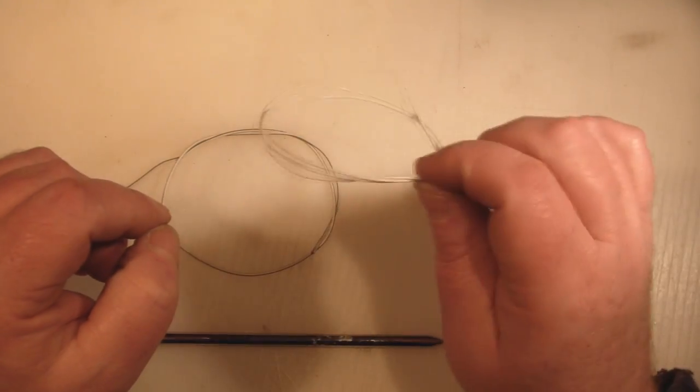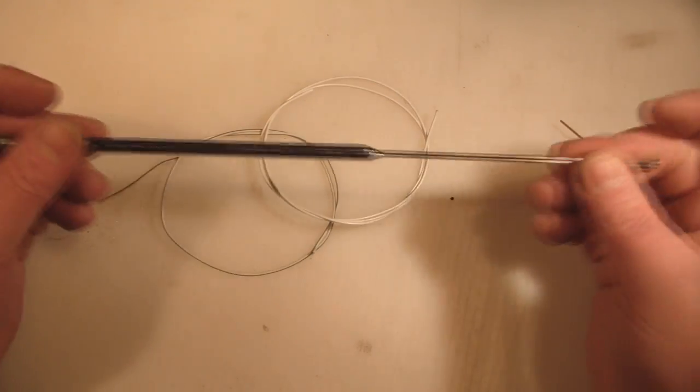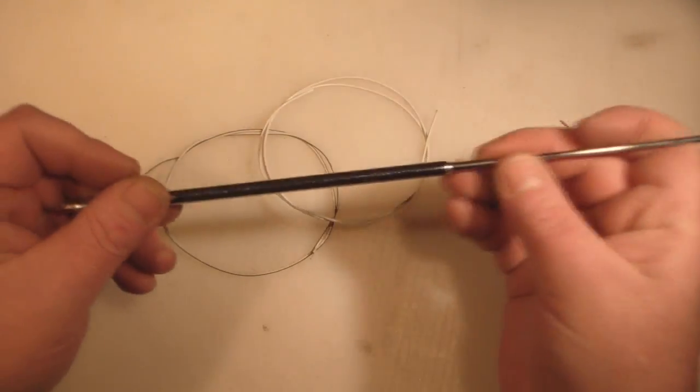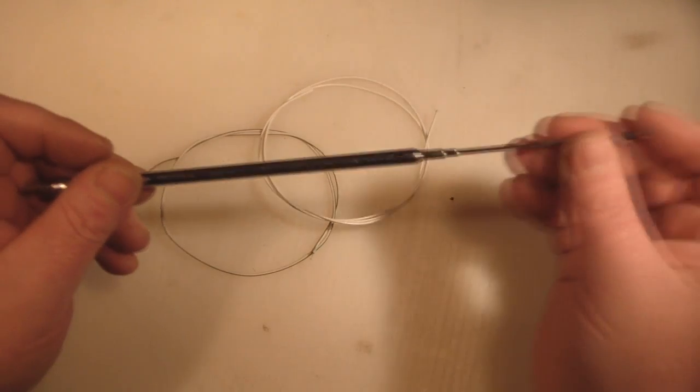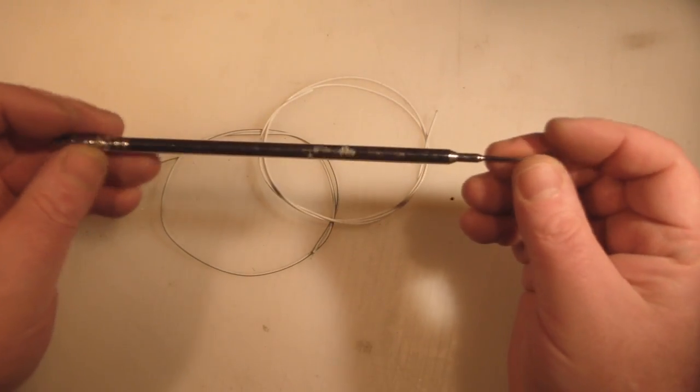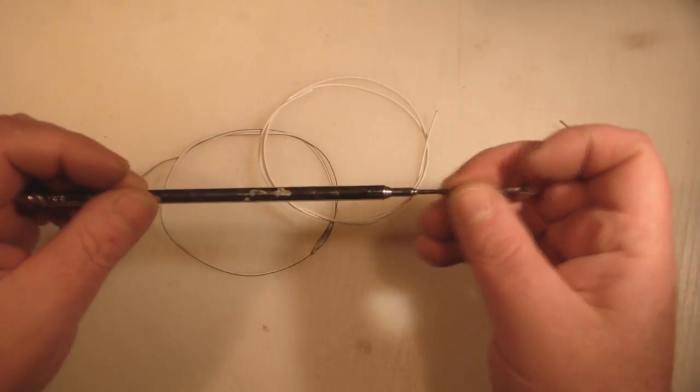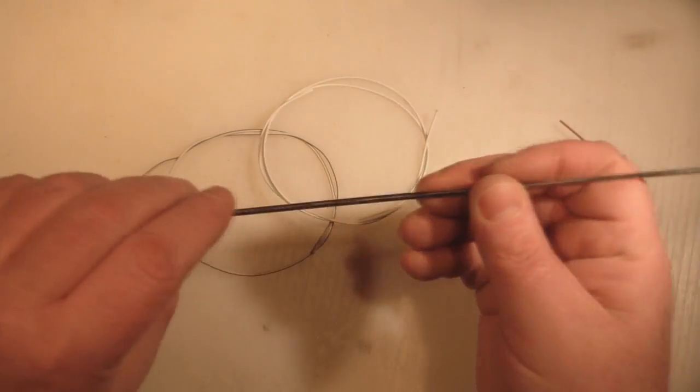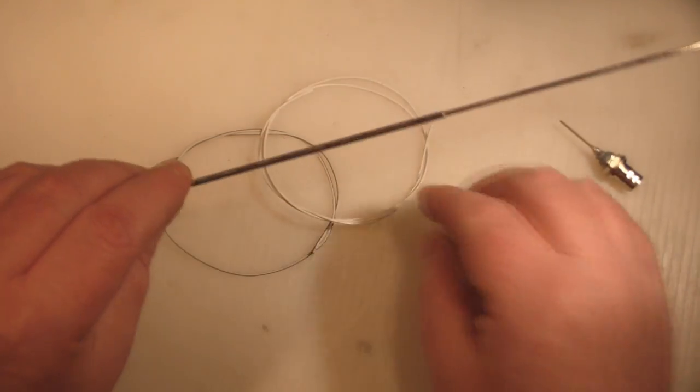But I'm not using one of these. I'm going to be soldering the coax directly to the can. I've got here one of these telescopic antennas. You can pick them up for less than a couple of pounds.